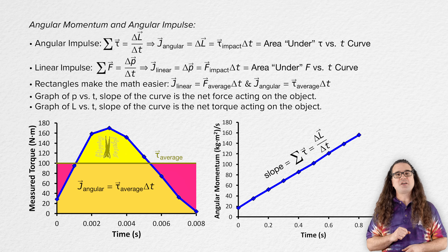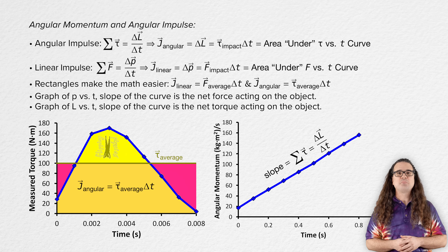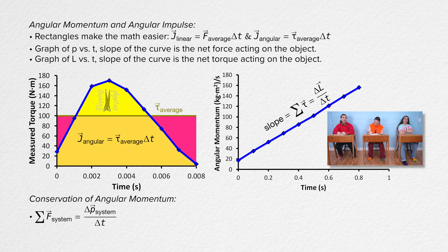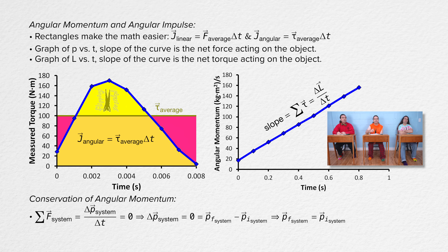Now let's talk about conservation of angular momentum. First, Billy, please show us the derivation for when linear momentum of a system remains constant. The net force on a system equals change in linear momentum divided by change in time. If the net force equals zero, then the change in linear momentum equals zero. The change in linear momentum equals final minus initial, so the final linear momentum equals the initial linear momentum — or the sum of the final linear momenta equals the sum of the initial linear momenta.